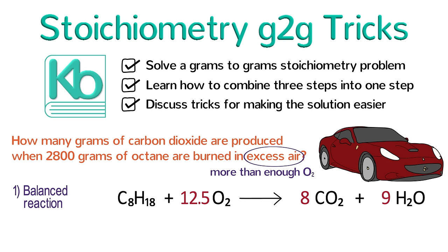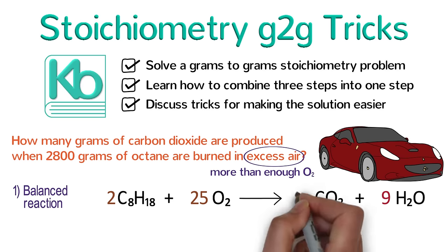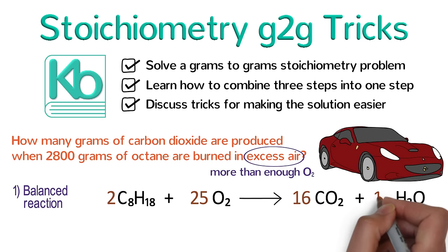However, we want the coefficients to all be whole numbers, so we can fix this by multiplying the entire reaction by 2. We put a 2 in front of octane, the 12.5 turns into 25, the 8 becomes 16, and the 9 becomes 18. And it's all balanced.